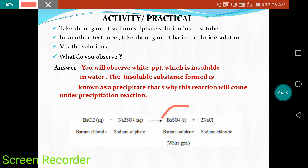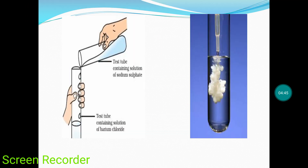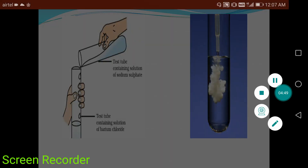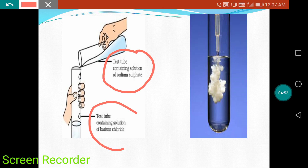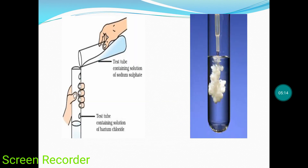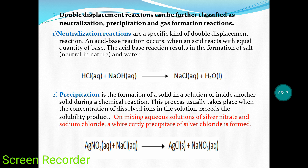That's why this reaction comes under the precipitation reaction — because the product formed after the double displacement reaction is a precipitate. Barium sulfate is a type of precipitate. Looking at the diagram: sodium sulfate solution is taken in one test tube and barium chloride solution in another. When they are mixed, a white precipitate of barium sulfate is formed. This type of precipitate is why it is classified under the precipitation reaction.